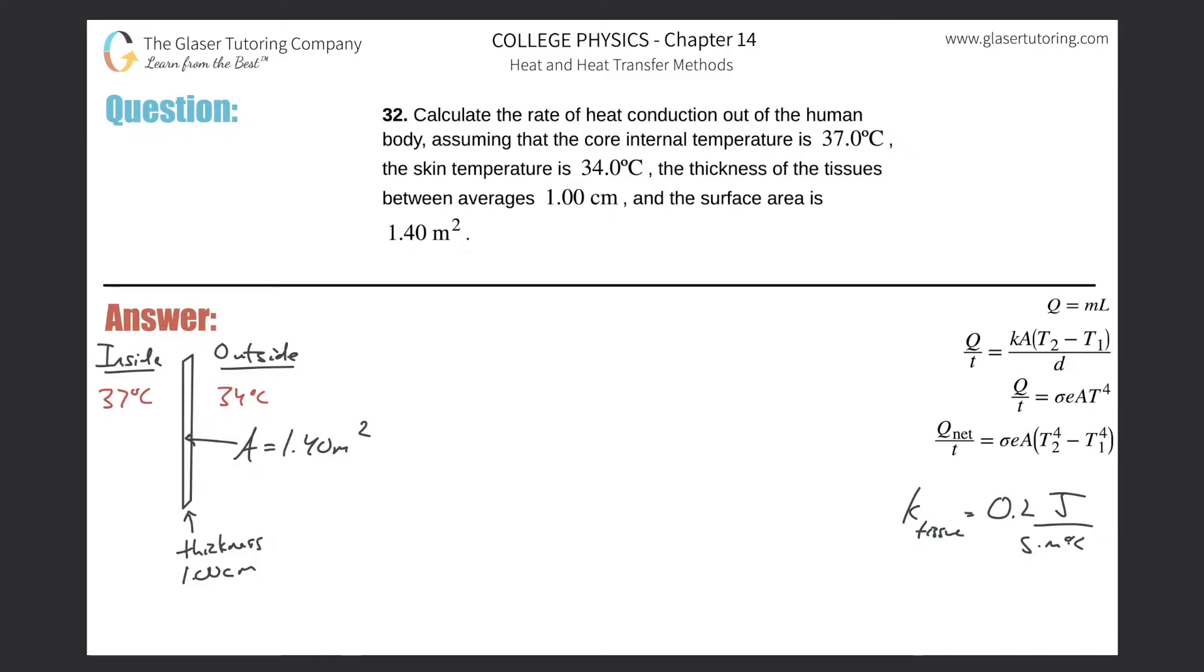Number 32: Calculate the rate of heat conduction out of the human body, assuming that the core internal temperature is 37 degrees Celsius and the skin temperature is 34 degrees Celsius. The thickness of the tissues between the internal, I guess, and the skin averages about one centimeter, and the surface area is 1.4 meters squared.